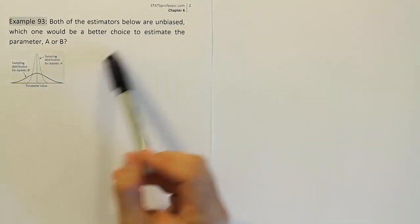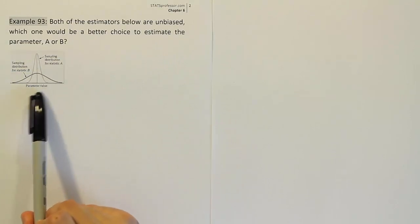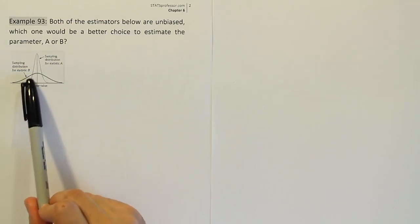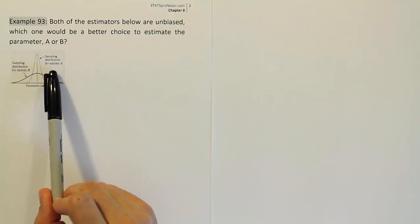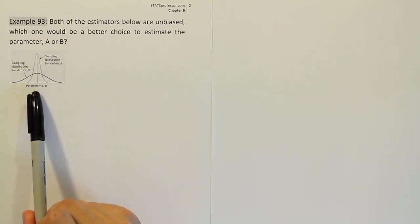So remember, being unbiased means that they're centered around the parameter that you're trying to estimate. This curve is the curve for estimator B. This skinnier curve is the curve for estimator A. They both are centered at the parameter value that we're trying to estimate, so that's why they're unbiased.